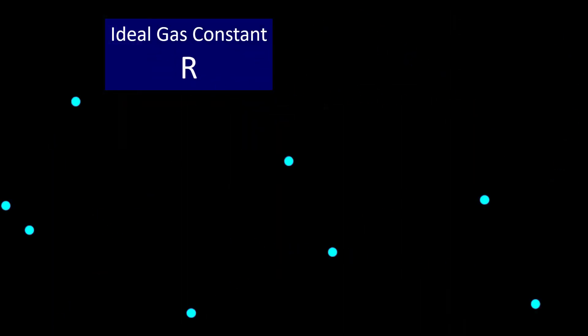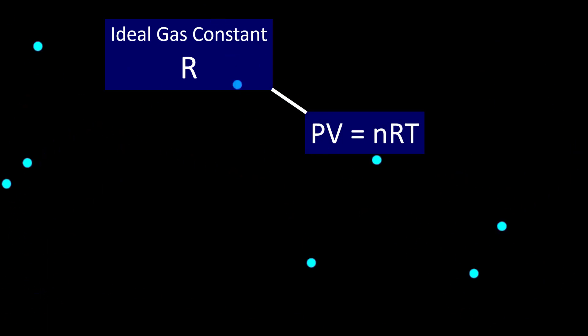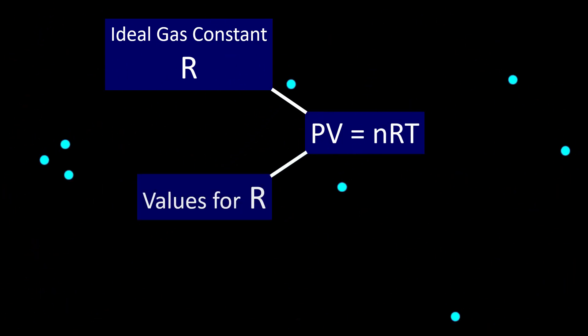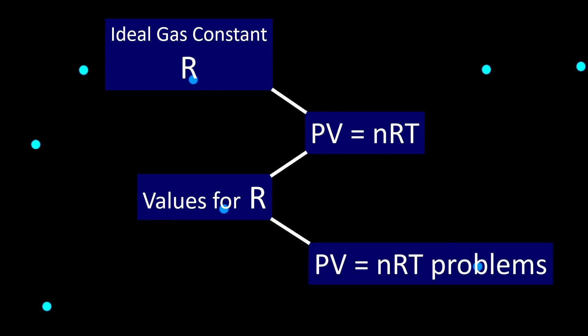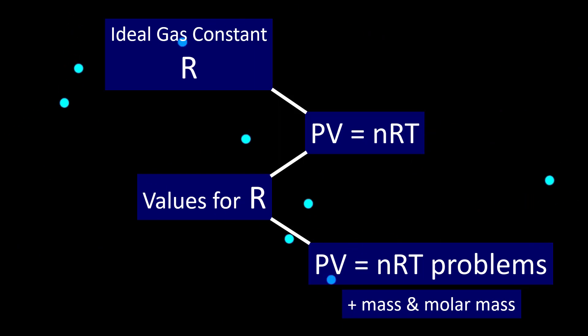We'll look at where PV equals nRT comes from, including how the different values from R are derived, and then several problems using PV equals nRT, including the use of mass and molar mass.